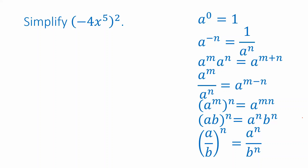So let's take a look at what we're working on. I have the expression negative 4x to the fifth, quantity squared, and I need to simplify that. First of all, we see that we have things multiplied together inside parentheses, raised to a power.